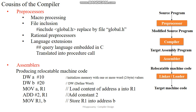The assembler gets input from the compiler in assembly programming language, processes it, and converts it into relocatable machine code. For example, DW means defined word — the address 10 is assigned to the variable A, allocating that memory location to A. For variable B, the memory address 20 is assigned. Then the content available at address A is moved into register 1, which is a temporary register available in the microprocessor.